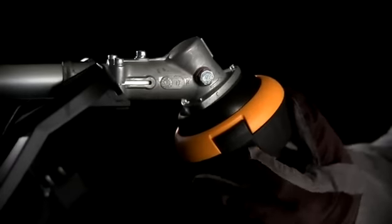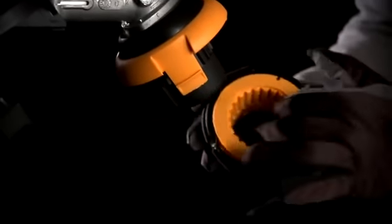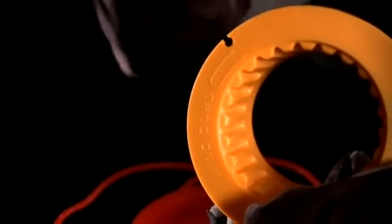This is how you replace the nylon line in your trimmer. Remove the reel. The reel has a symbol indicating the direction of rewinding. Find the middle part of your line and secure the line using the slot in the reel.